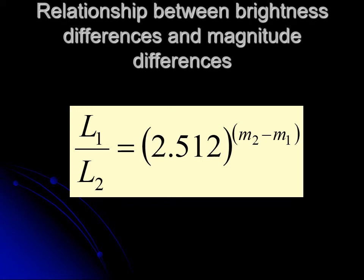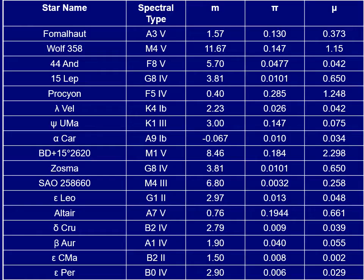You want to find the ratio of brightnesses. You don't know how bright each star really is, but you can still find the ratio of brightness — the difference between the two — by using our table of data.